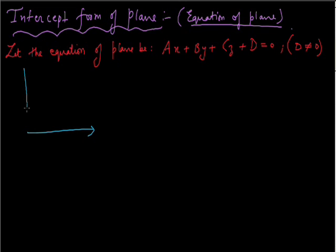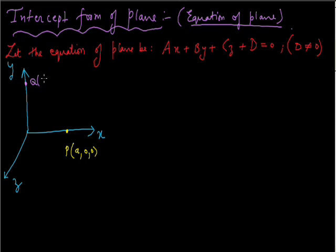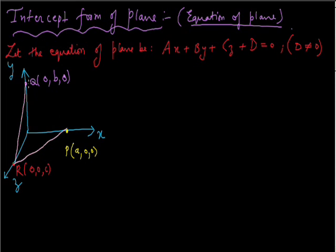Let us take this as the X axis, this as the Y axis, and this as the Z axis. Suppose the plane passes through three points: point P with coordinates (a, 0, 0), point Q with coordinates (0, b, 0), and point R with coordinates (0, 0, c). Here a, b, c are the intercepts made by the plane on the X, Y, and Z axes respectively. The intercept on the X axis is a, on the Y axis is b, and on the Z axis is c.